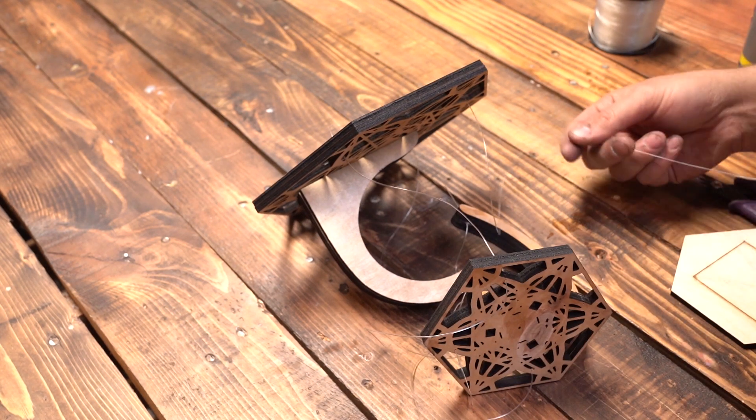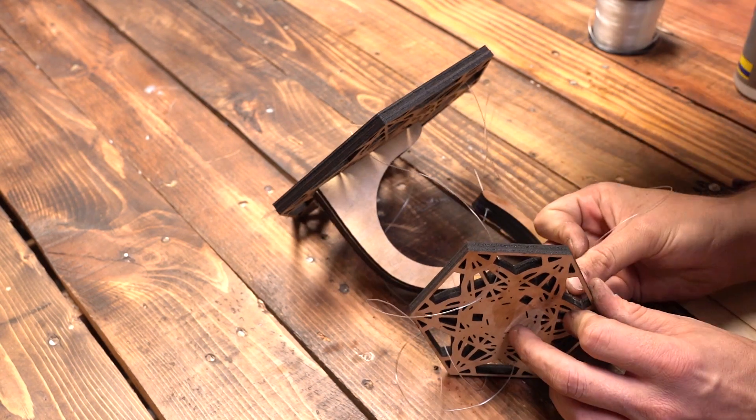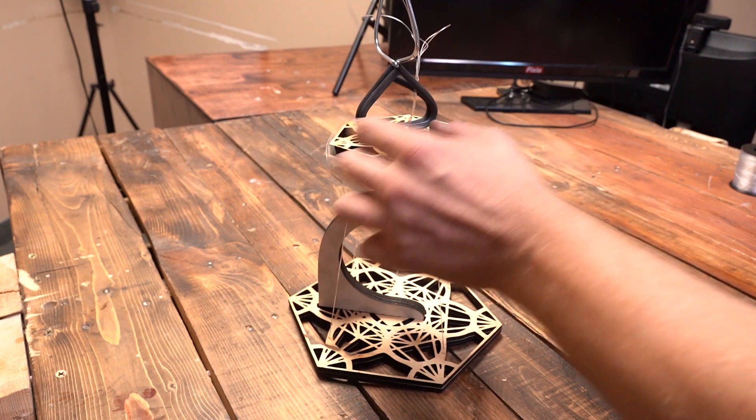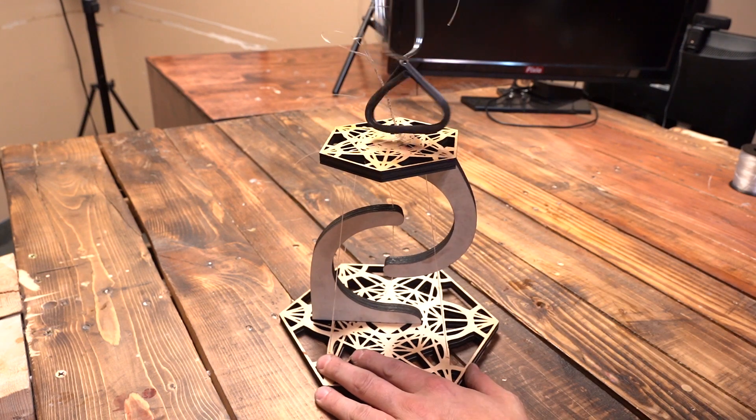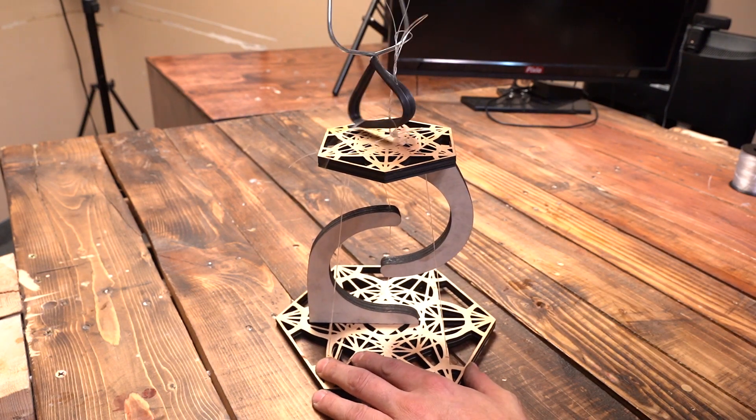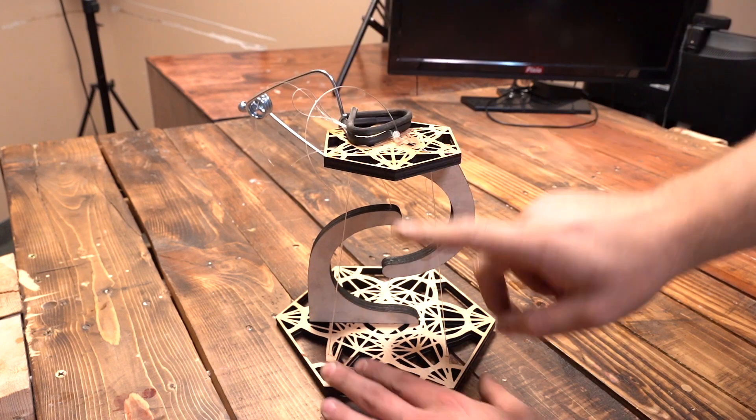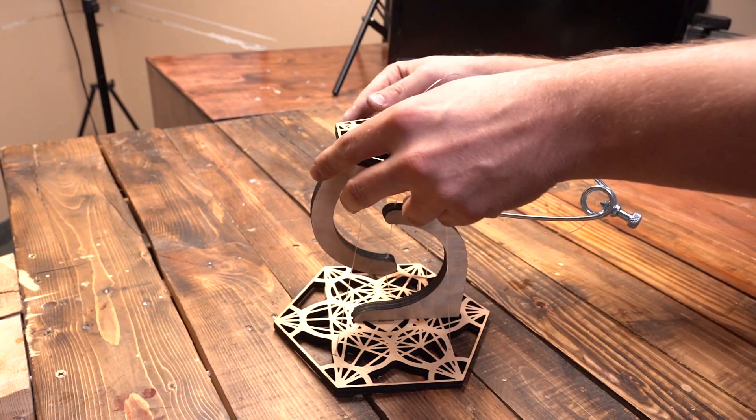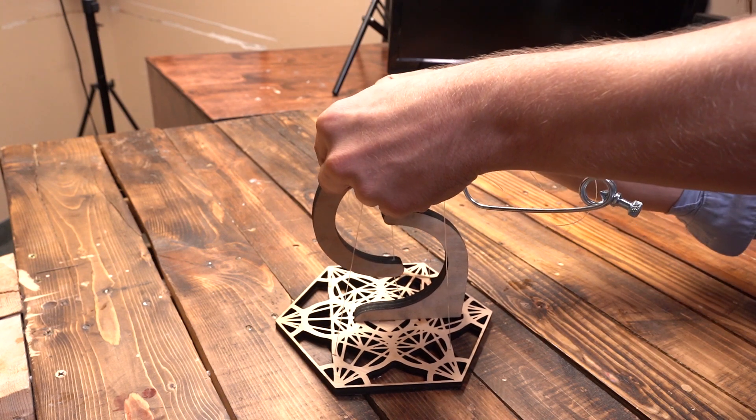Now run it through the bottom and we will add tension by spinning this piece right here. You can use a clamp or some vise grips. Spin it and try to even out the tension so everything is nice level and square.